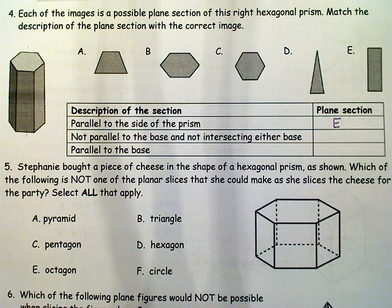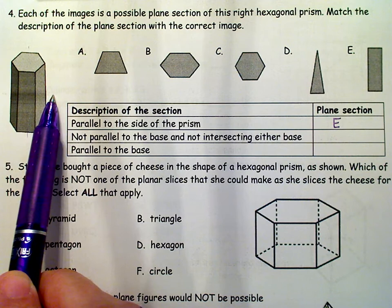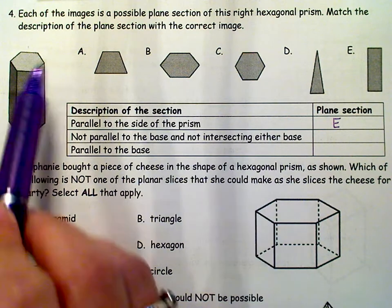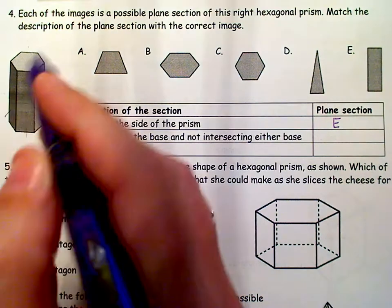All right, the next one says it's not parallel to the base, so it's not going this way, but it's not intersecting the base, so it can't go this way. So it's got to kind of go at this angle here.